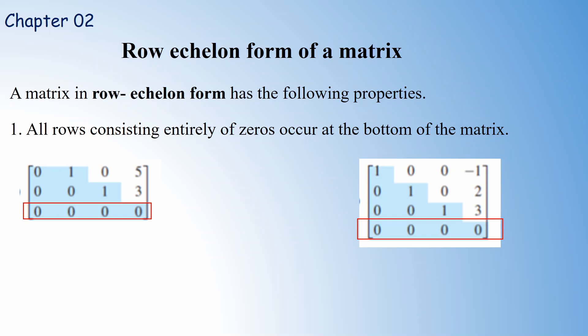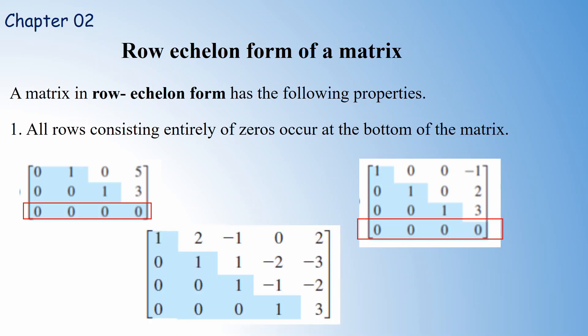Here is one more example where the zero row also appears only at the bottom of the matrix. You may think that a matrix in row echelon form must have a zero row — no, that is not the case. If there exists a zero row, it should appear only at the bottom. For instance, in the last matrix shown, the fourth row is not a zero row, and since this matrix contains no zero row at all, it is still in row echelon form.